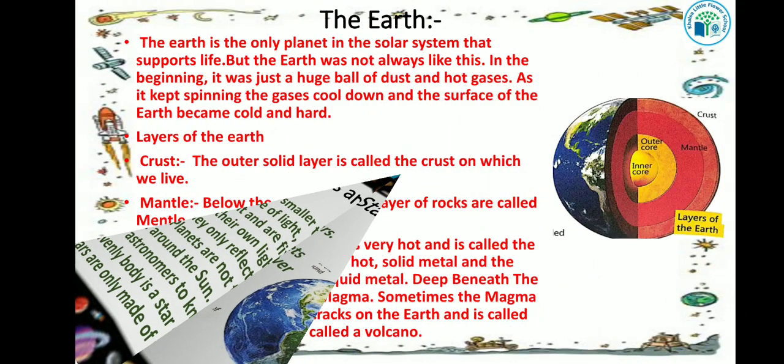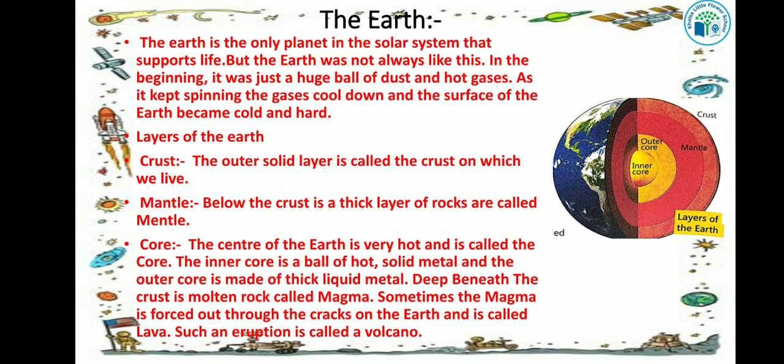The earth is the only planet in the solar system that supports life. But the earth was not always like this. In the beginning, it was just a huge ball of dust and hot gases. As it kept spinning, the gases cooled down and the surface of the earth became cold and hard. Now let's see the layers of the earth.